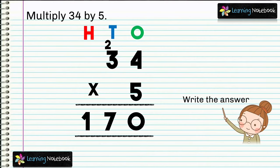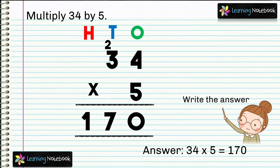The answer is 34 into 5 equals 170. So students, this is how we do multiplication of a 2-digit number by a 1-digit number with regrouping.